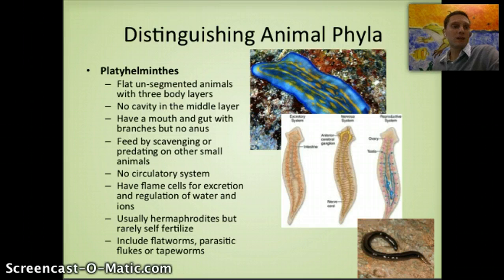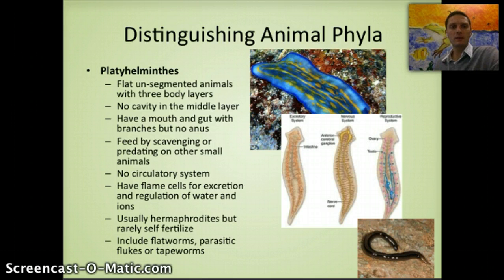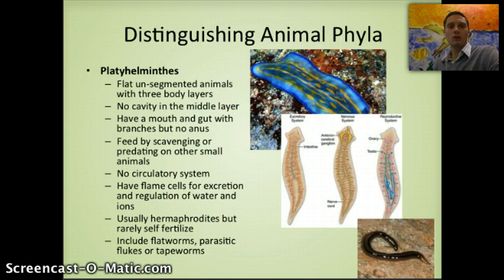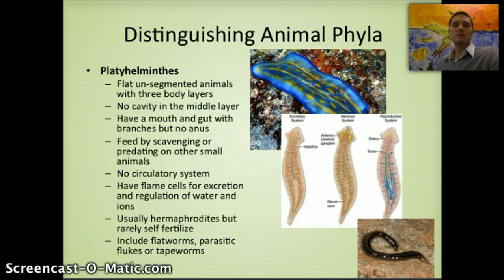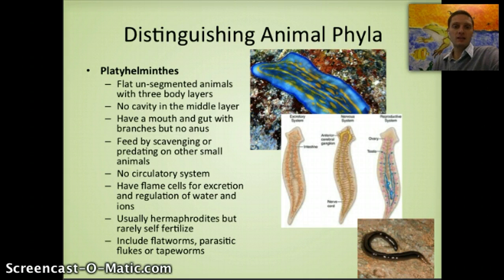The next phylum is Platyhelminthes — essentially flat, unsegmented worms often found in marine or moist environments. They have a mouth and gut but no anus, and feed by scavenging or finding small prey. They lack a circulatory system and use a flame cell for excretion and water/ion regulation. They are often hermaphrodites but rarely self-fertilize. Examples include flatworms, parasitic flukes, and tapeworms, and some can be found in pond water samples.